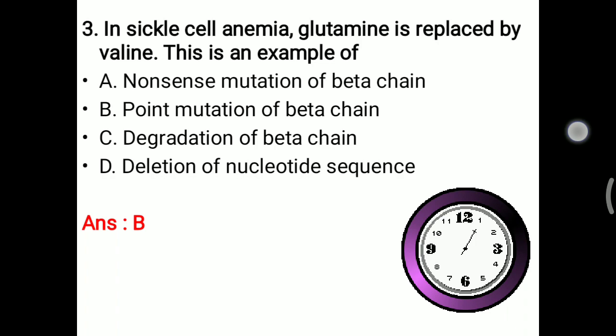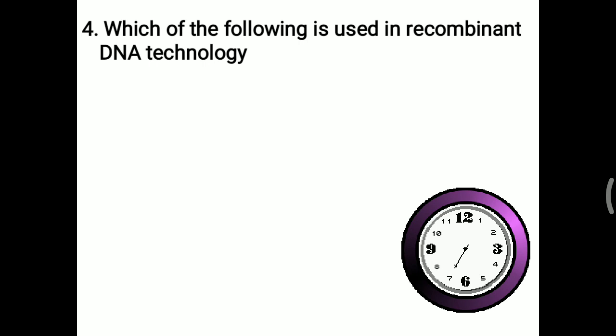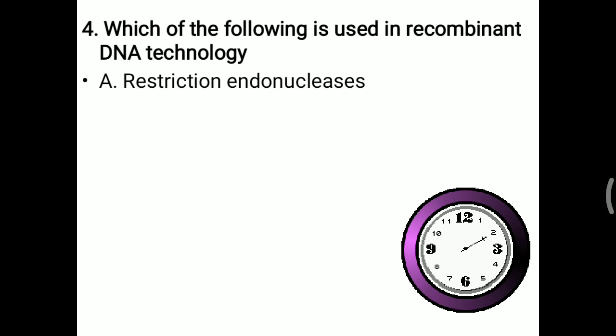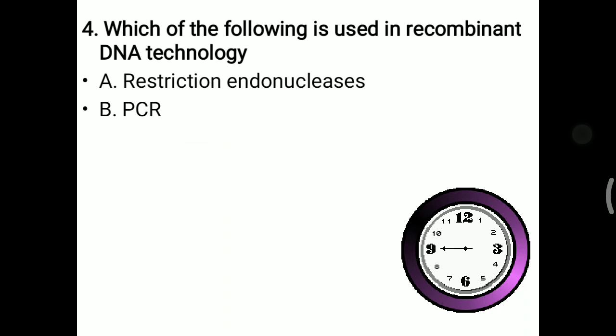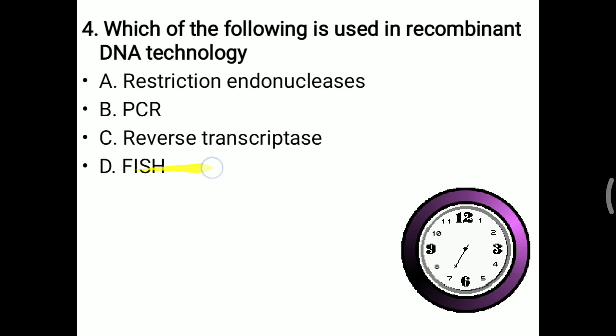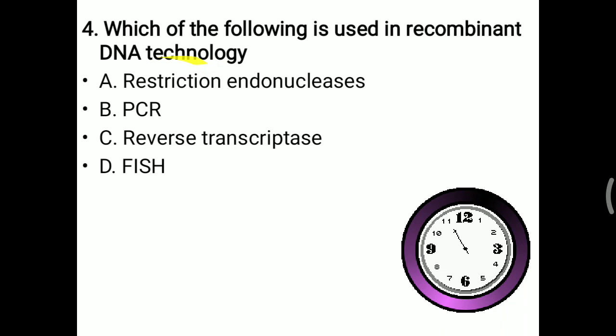Next question: which of the following is used in recombinant DNA technology? Recombinant DNA technology inserts a targeted gene into a host molecule. Restriction endonuclease is the molecular scissor. PCR is for gene amplification, reverse transcriptase converts mRNA to DNA, and FISH (fluorescent in situ hybridization) is a detection method. Restriction endonuclease cuts the nucleotide sequence, allowing gene insertion. So the right answer is restriction endonuclease.